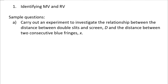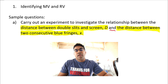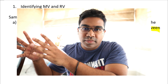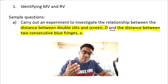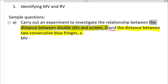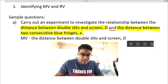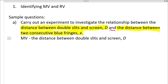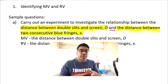If the question is framed as 'investigate the relationship between,' the two things that come after 'between' will be the MV and RV. After 'between' we have: the distance between the double slit and screen D, and the distance between two consecutive blue fringes X. The manipulated variable is what you set at the beginning of the experiment, and the responding variable is what you measure at the very end. So we will be setting the distance between the double slit and the screen as MV, and measuring the distance between two consecutive blue fringes as RV.